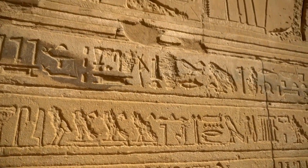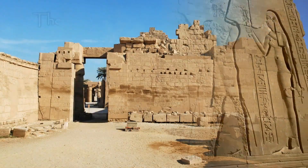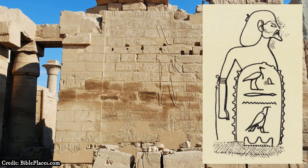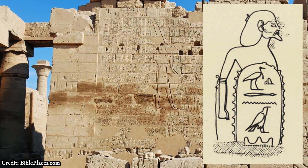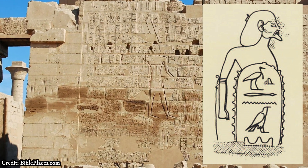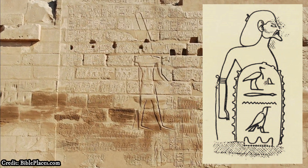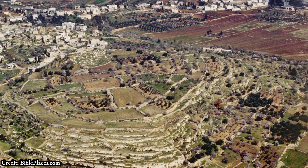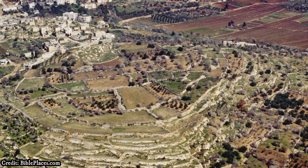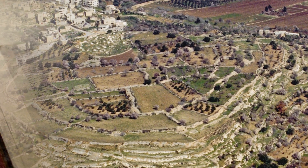The first known extra-biblical historical reference to Gibeon is found at the Bubastite Portal of the Temple of Amun at Karnak in Egypt, where Gibeon is listed amongst the cities that were taken by the pharaoh Shoshenk I during his campaigns into the kingdom of Judah and Israel in the late 10th century BC. However, archaeological excavations demonstrate that a significant Canaanite city was located at the site during the earlier Bronze Age.